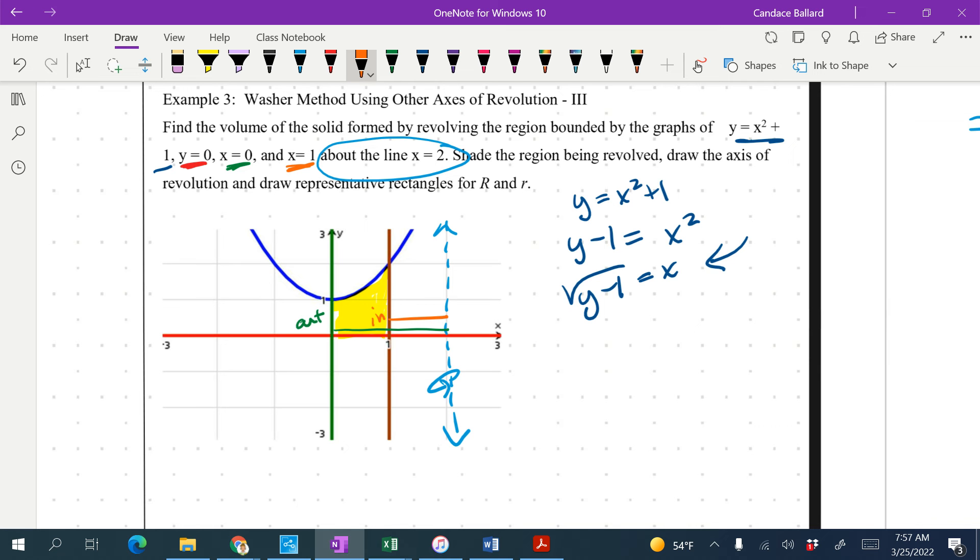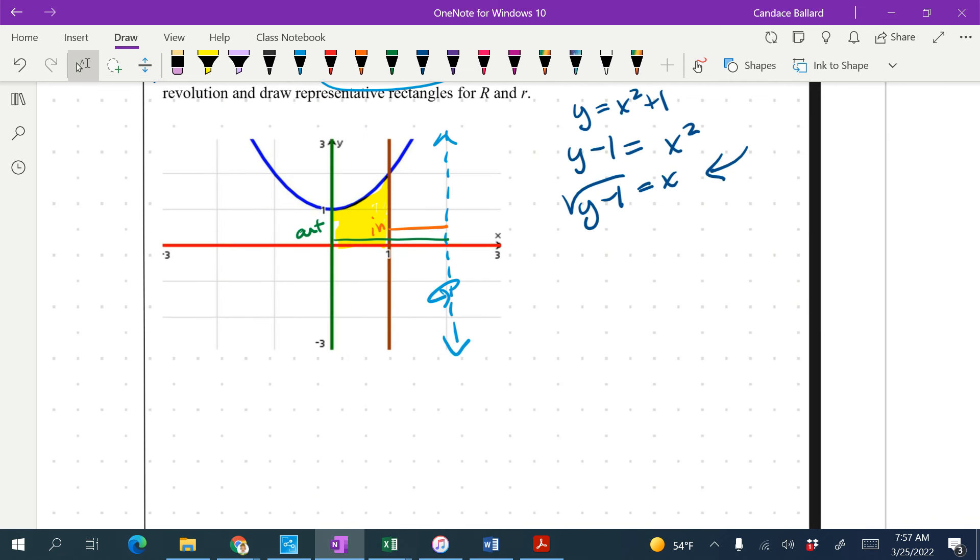But remember, when we set that up, we have to go right minus left. So I'm going to go from my right first, which is the axis of revolution. Let's start setting up this one here, which I notice I have two because I have two places where I would be able to draw rectangles.